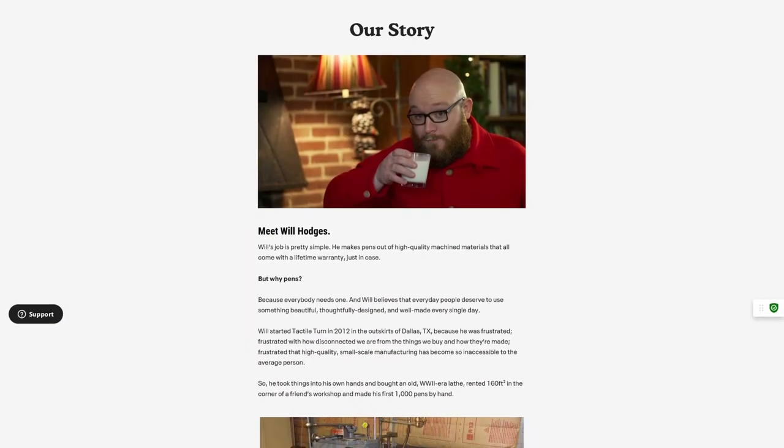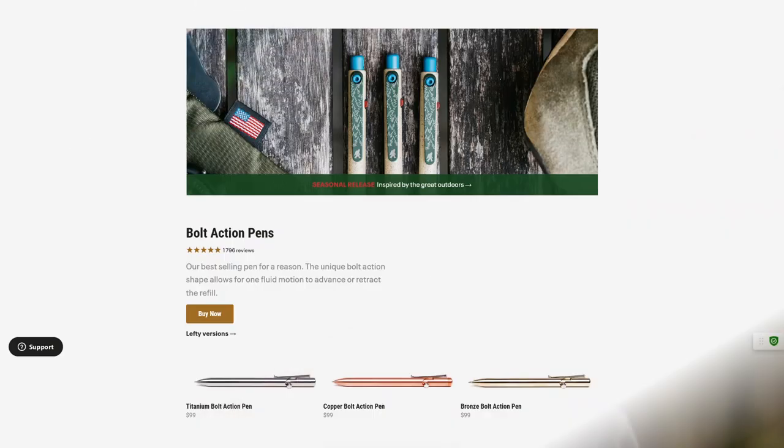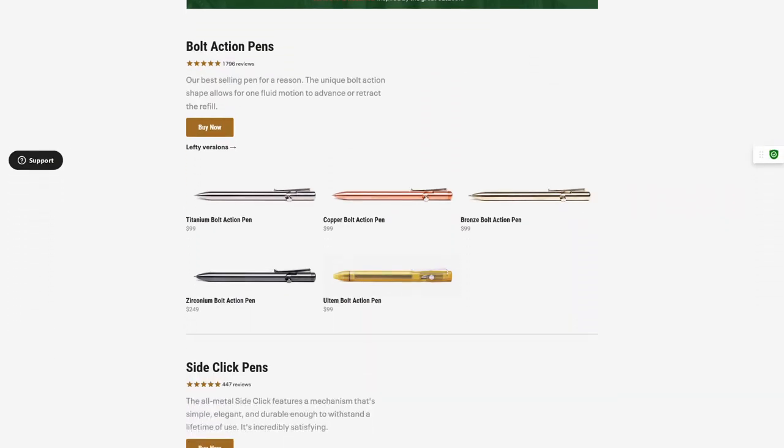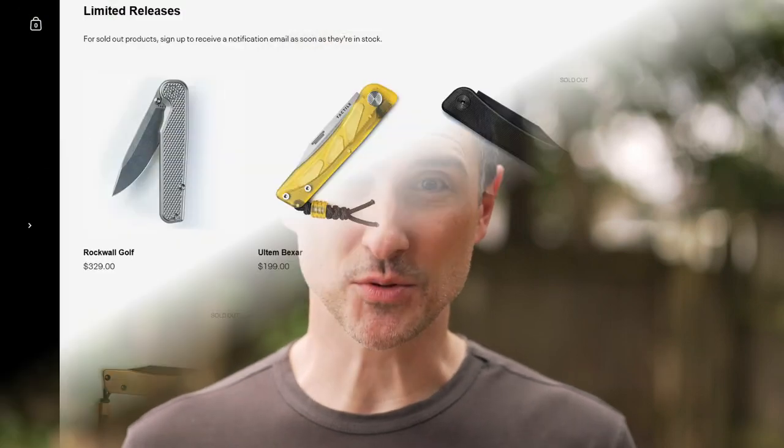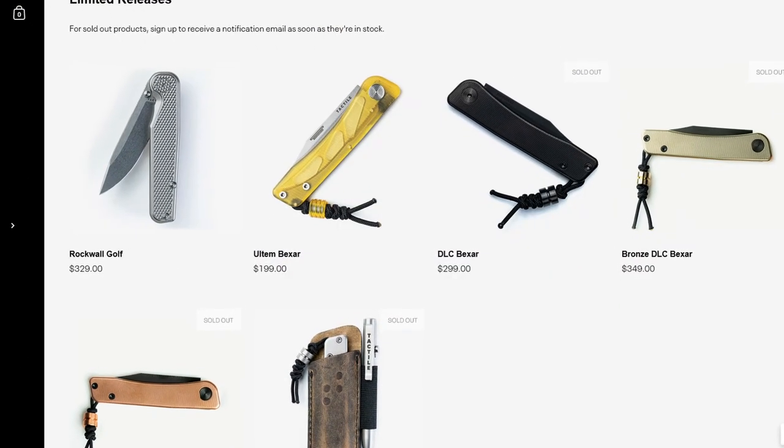Tactile Turn started in 2012 by founder Will Hodges. Will Hodges really believed that people should enjoy things that are high quality. He started making everything by hand on a lathe. And since then he has expanded his business and they have really state-of-the-art equipment, but everything is still handcrafted here in the United States in Dallas, Texas. He started with pens and he came out with a few different lines of pens, different models, different materials.